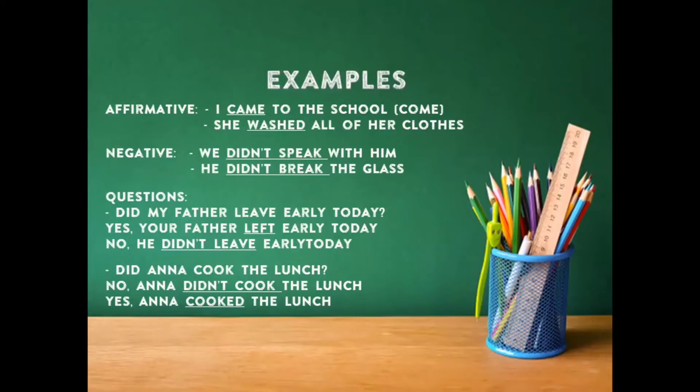Negative: We didn't speak with him. He didn't break the glass. Tenemos que hay un solo auxiliar para todos los sujetos. En la primera oración, nosotros no hablamos con él. Y la segunda, él no rompió el vidrio.